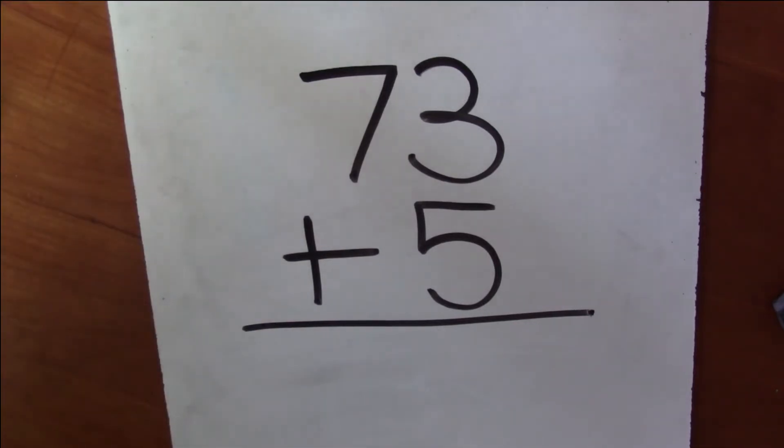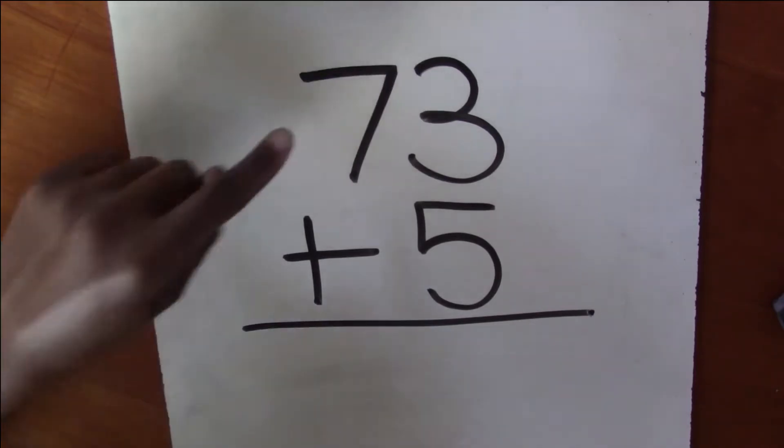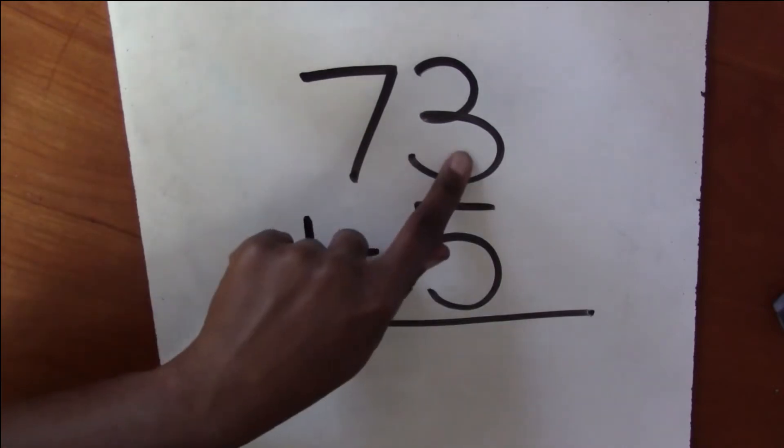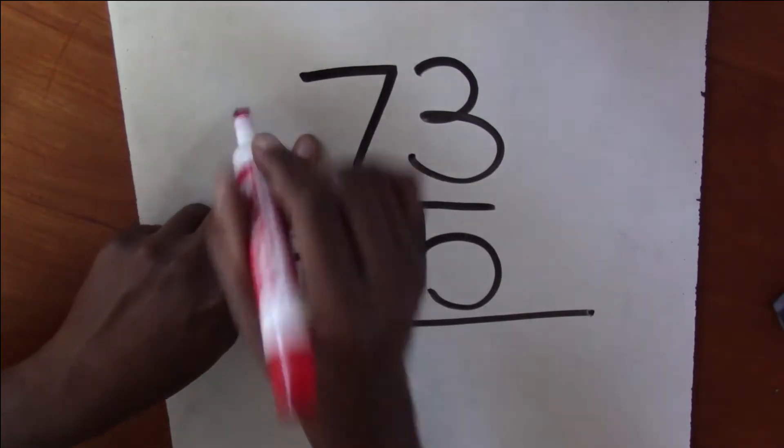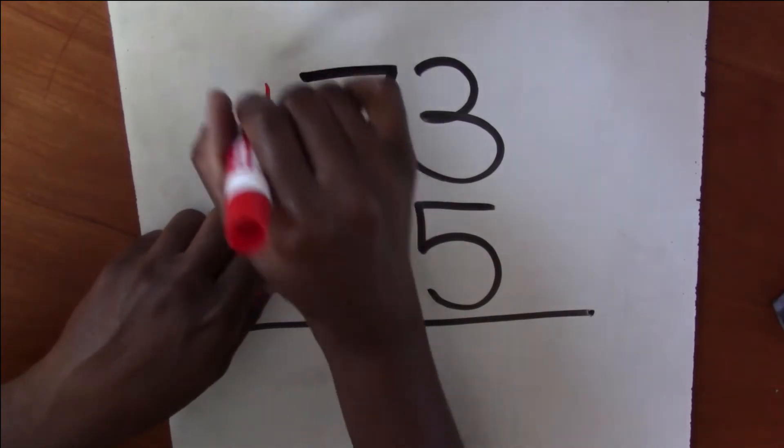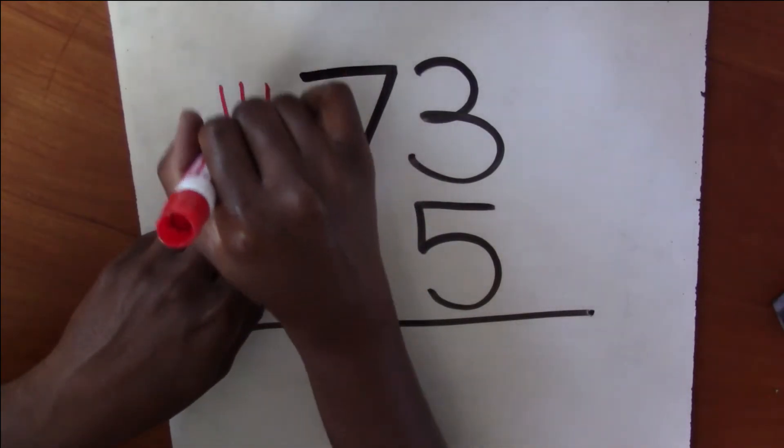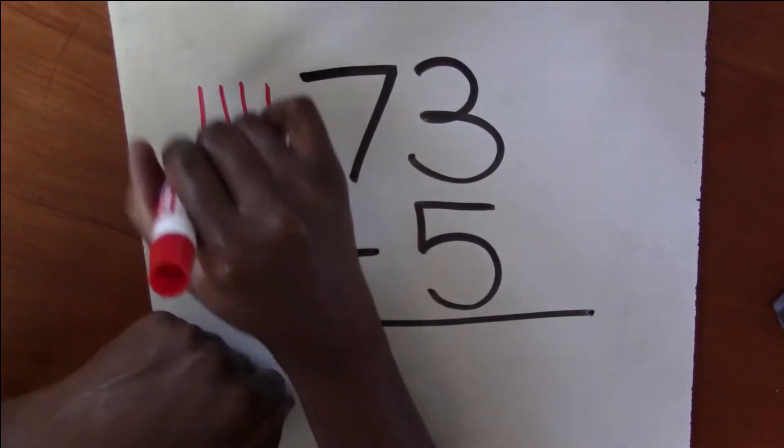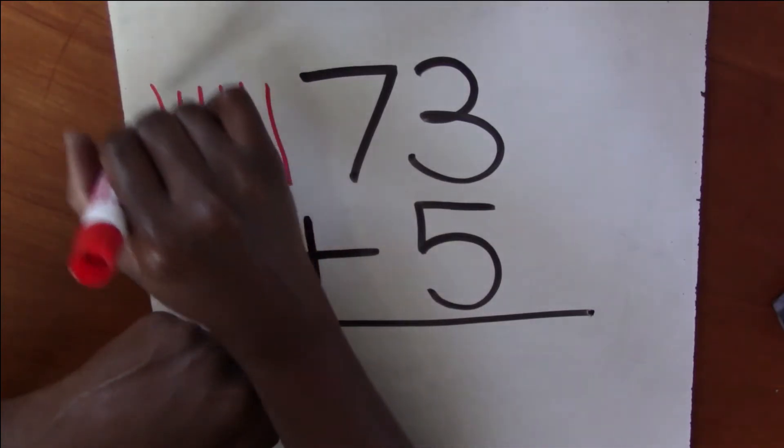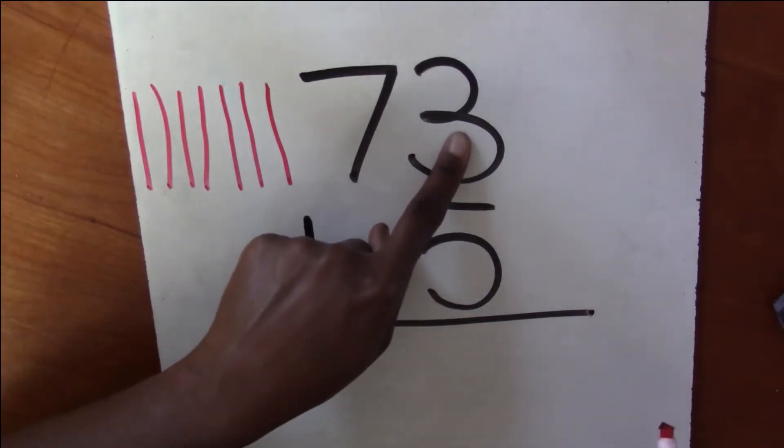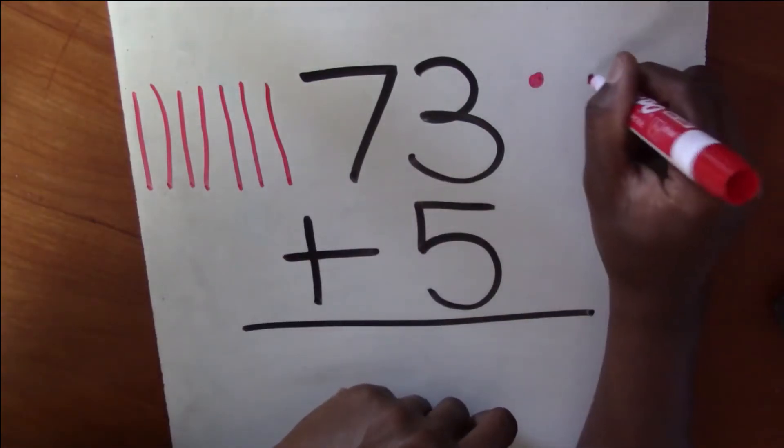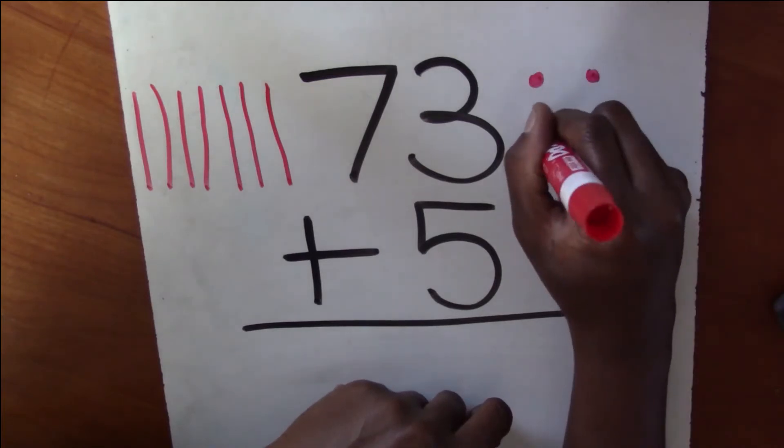Are you ready to check your answer? All right, I'm going to work through it. So 73. Now I need to draw my 10 sticks. So I'm going to draw seven 10s. 10, 20, 30, 40, 50, 60, 70. I'm going to draw three ones. One, two, three.